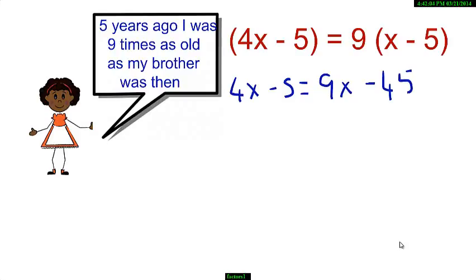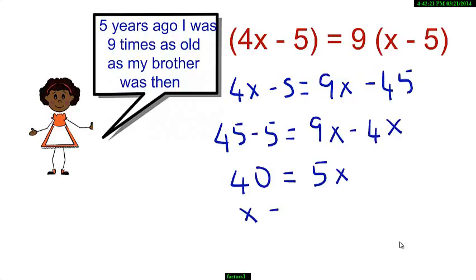Now, bring the x's to one side of the equation and the constants to the other. So, we get 45 minus 5 is equal to 9x minus 4x or 40 is equal to 5x. So, x is 40 by 5 which is 8.